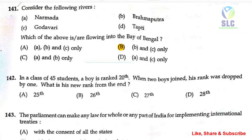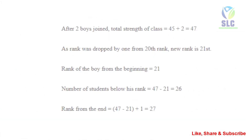The next question: in a class of 45 students, a boy is ranked 20th. When two boys joined, his rank was dropped by one. What is his new rank from the end? Initially the total is 45 students. After two boys joined, the total strength is 45 plus 2 equal to 47. After the two boys joined, the rank was dropped by one, so the new rank is 21st.